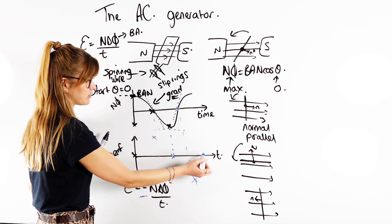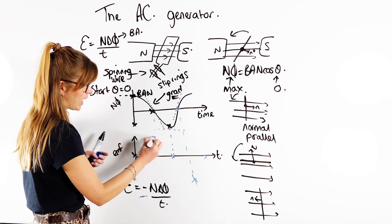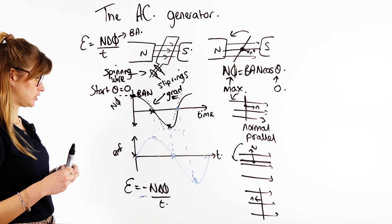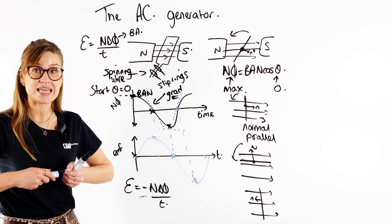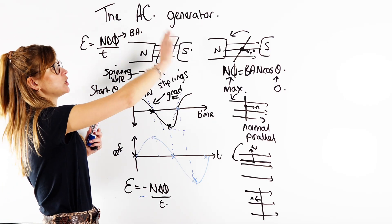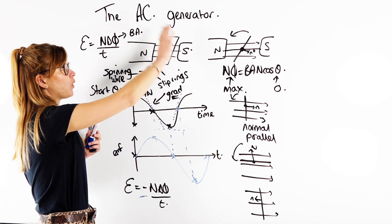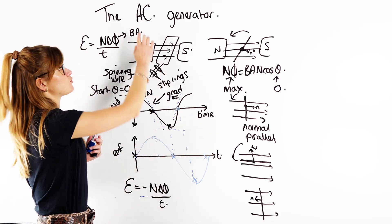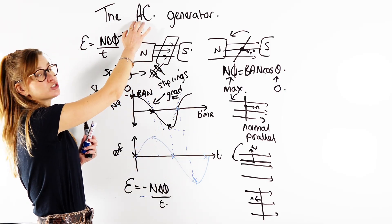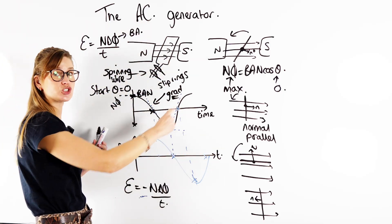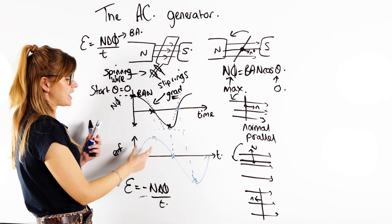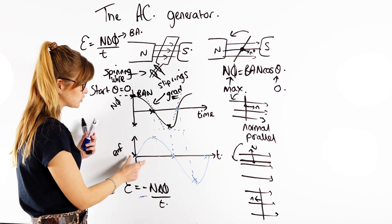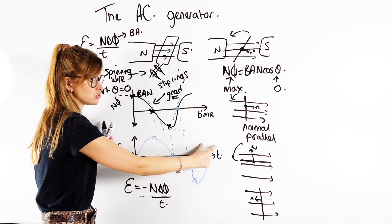We can see that the EMF follows a sine curve. In the generator, as the coil spins, the induced EMF changes over time. That's why we call it alternating current — in a complete circuit, the induced EMF gives us a current that alternates from positive to negative values.